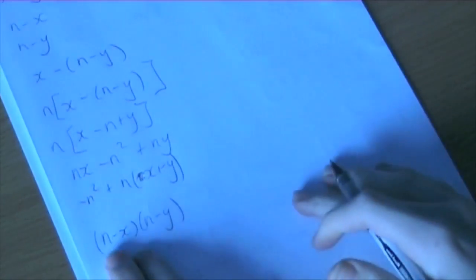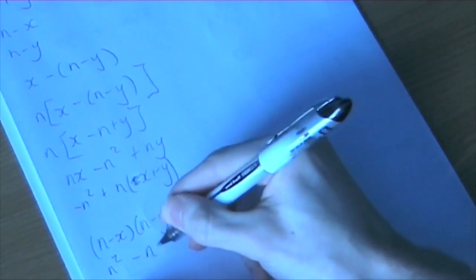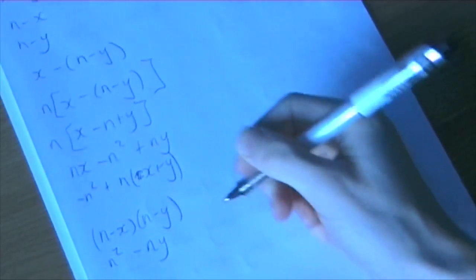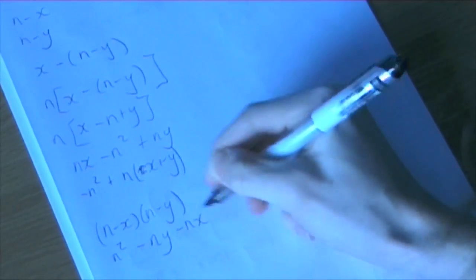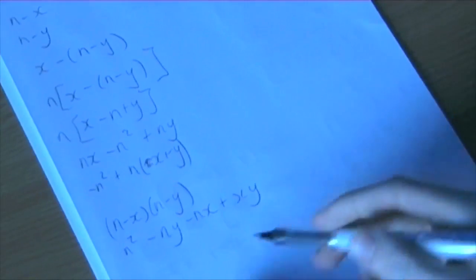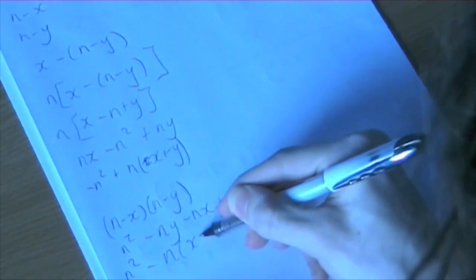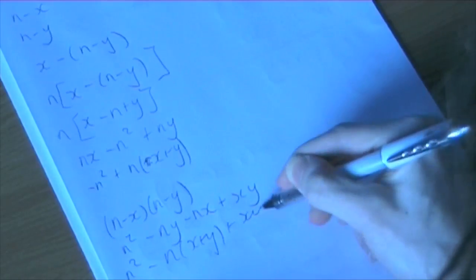And again, if we expand this, we get n squared, then n times minus y would be minus ny. Minus x times n would be minus nx. And minus x times minus y would be plus xy. And we can factorize this, n squared minus n(x plus y) plus xy.